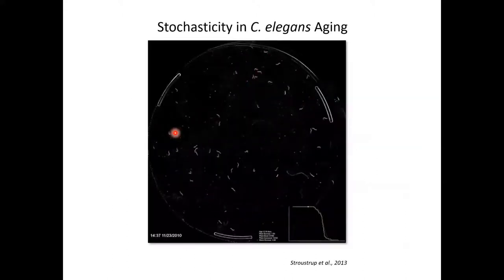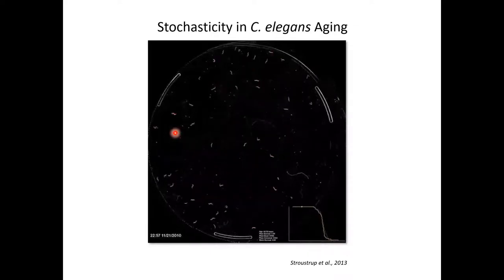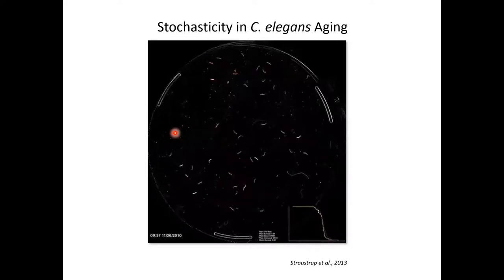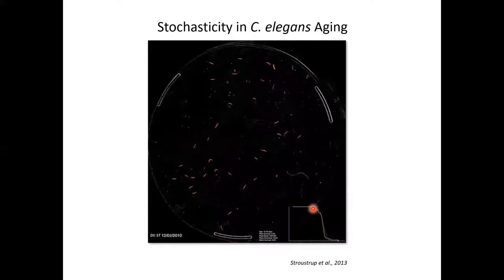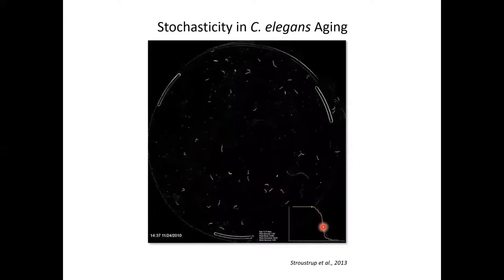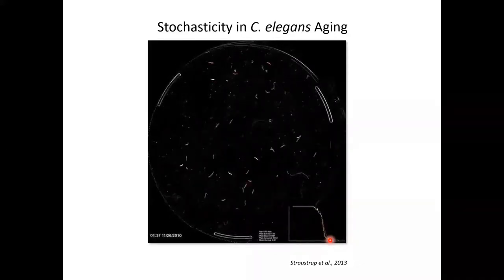C. elegans is an ideal model organism to study individuality in aging and I know it won't take much to convince you about this. Here you can see a worm population of wild type individuals. They're age-synchronized and they are maintained on the same plate. In this lifespan curve, you can see that the death of the first individual in this population at the beginning of this slope can be a week apart from the death of the last individual in this population, which we all agree is pretty remarkable for a species that lives an average of three weeks.